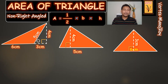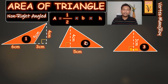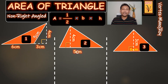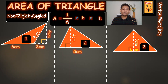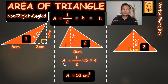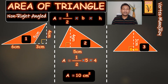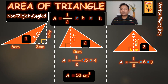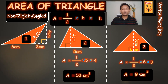Now, how can we find the area of a non-right angle triangle? For triangle number 2, to find the area using the same formula: area = ½ × base × height. The base is 5 and the height is 4, so the area comes to 10 cm². For example number 3, area = ½ × 6 × 3, and the answer is 9 square cm.